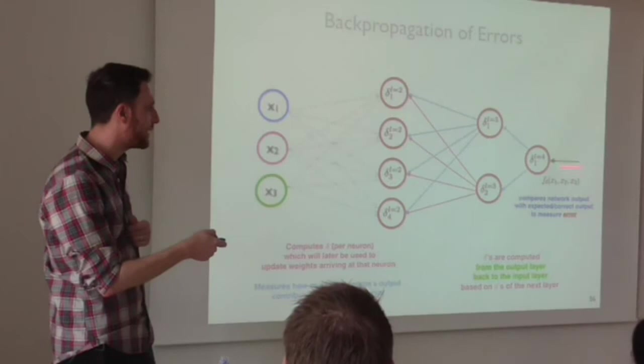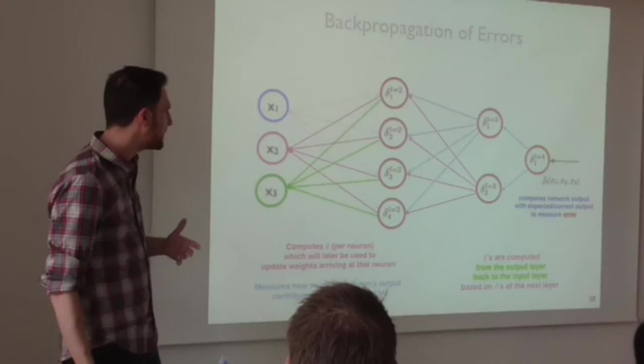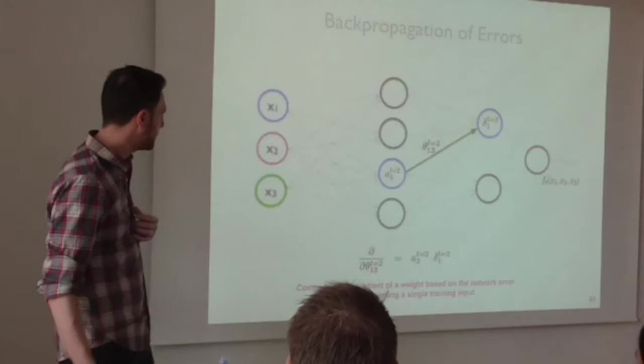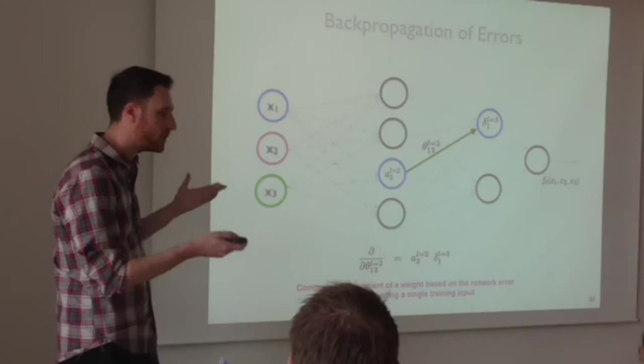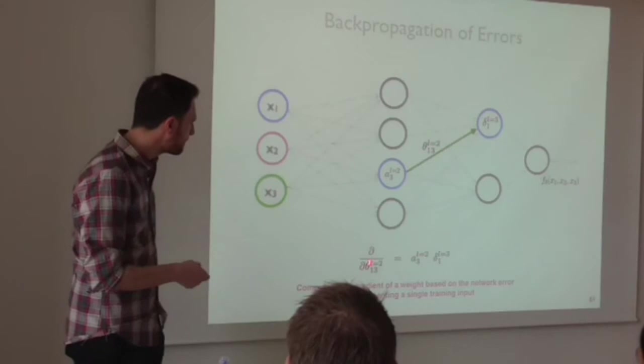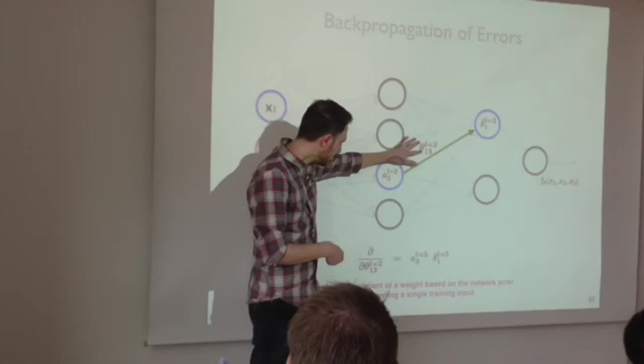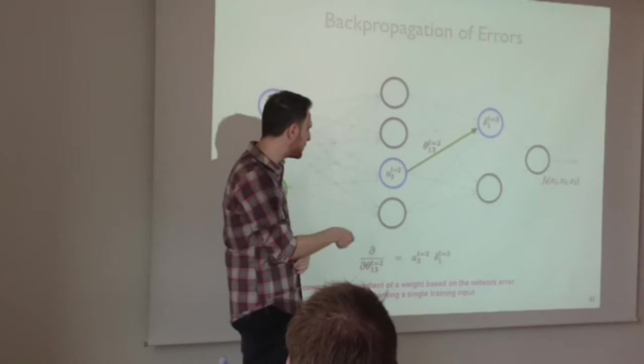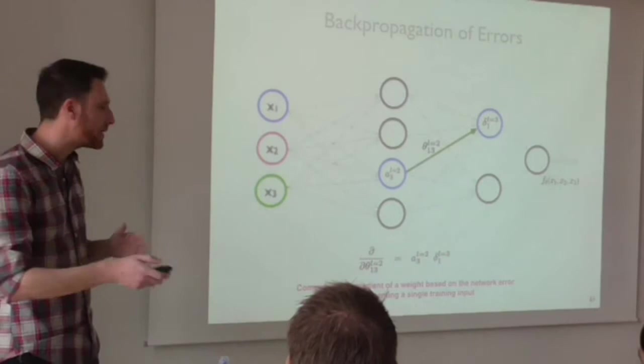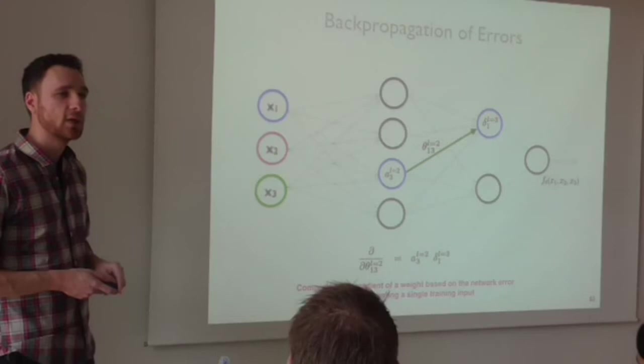After you compute the delta at the last layer, you can compute the delta of the neurons that come before, and so on. You assign blame to each one of the neurons based on what was the final error. Backpropagation also tells you how to use these delta values — which are real numbers — to compute the gradients of each one of these weights. It's just a simple formula; you don't have to know it by heart. Then the question is: I know the current value of this weight and I've computed its gradient using the delta values — how do you use this to improve the network?